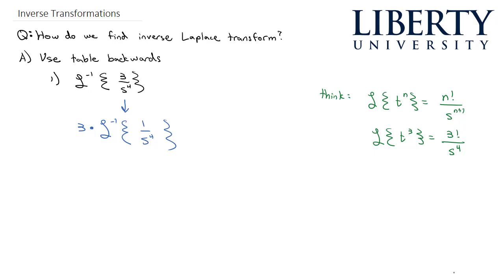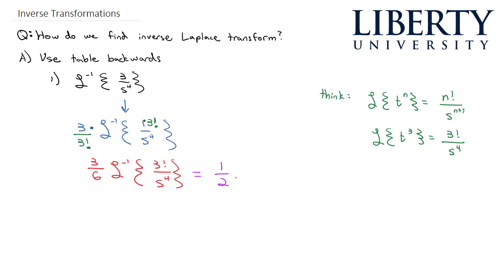That is almost what I have on this inverse Laplace transform. The only thing I'm missing is I need a 3 factorial in the numerator. So I can multiply by 3 factorial in the numerator if I also divide by 3 factorial — but since it's a constant, I'm going to divide by it outside. So we end up with 3 over 6 times the inverse Laplace transform of 3 factorial over s to the fourth. 3 sixths reduces to 1 half, and the inverse Laplace transform of 3 factorial over s to the fourth is t cubed.